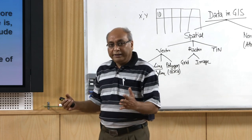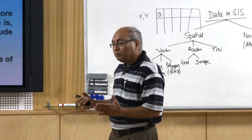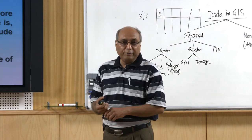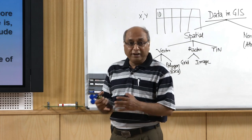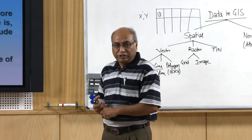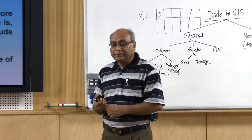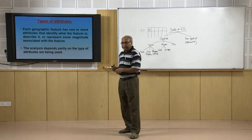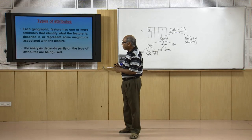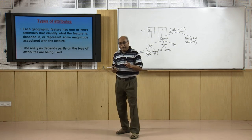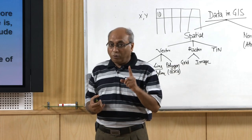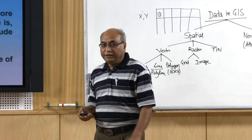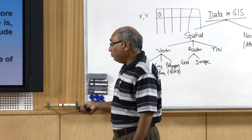Theoretically our GIS system should support n number of columns — or from a database point of view, n number of fields — against each object, and we can take advantage of this in the analysis part. Remember that in case of raster data we can have only one single attribute, but in case of vector data theoretically we can have n number of attributes.